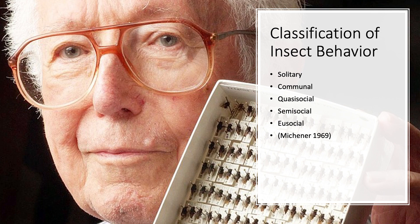We can give thanks to Charles Michener and his classification of insect behavioral organization. Although some of the caveats are blurry with gray areas, he did a pretty good job. His classification starts with solitary insects, then moves to communal, quasi-social, semi-social, and eusocial behavior. I'll walk through each of these using insect examples.